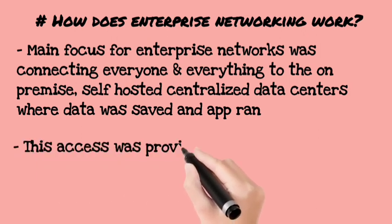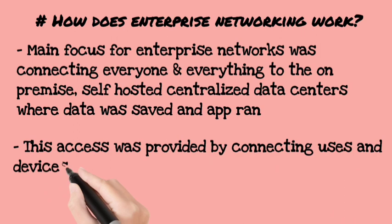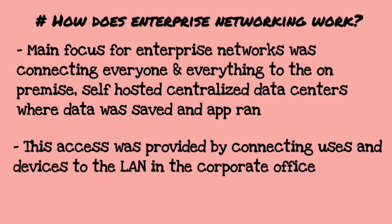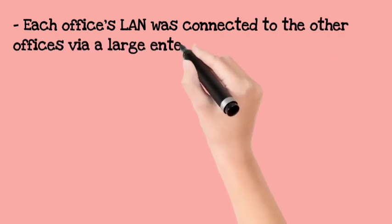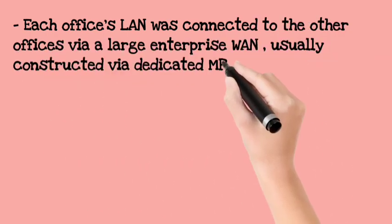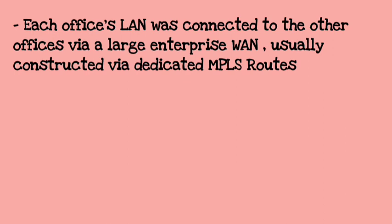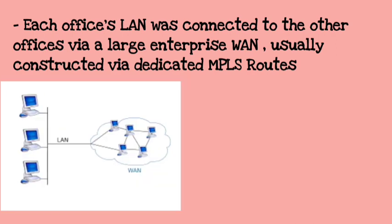The second thing is: because our systems are connected, users and devices can connect with the help of a LAN. Now every office is connected with the help of a large enterprise network, that is the WAN — Wide Area Network.